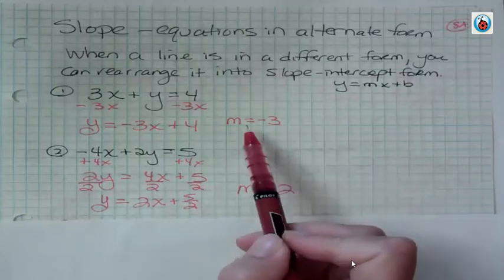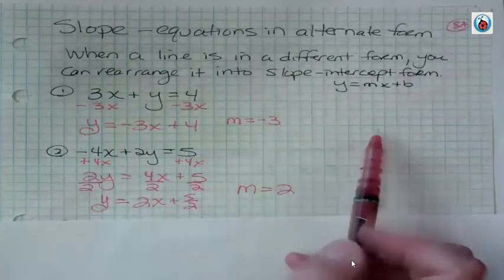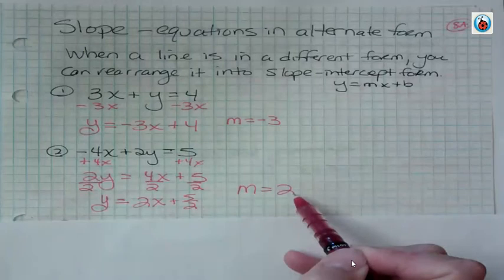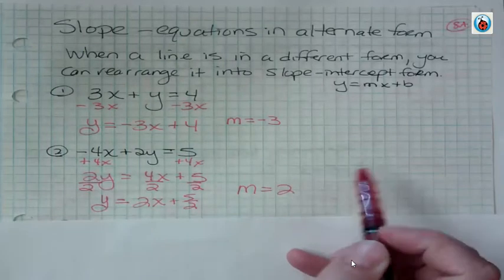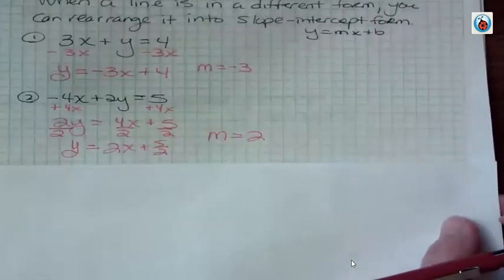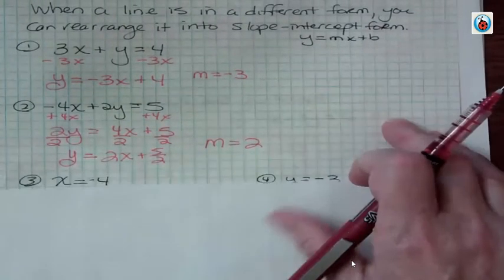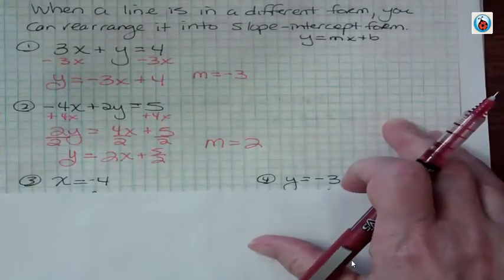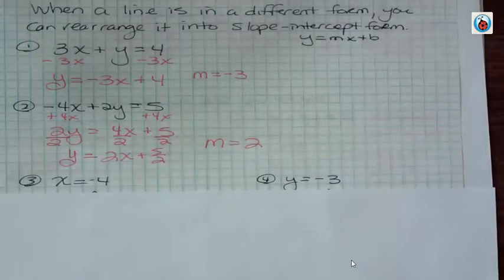This negative 3 would represent a line that falls from left to right. This positive 2 would represent a line that rises from left to right. And the other thing that you're asked to do on your homework is what if you had an equation in one of these two formats,